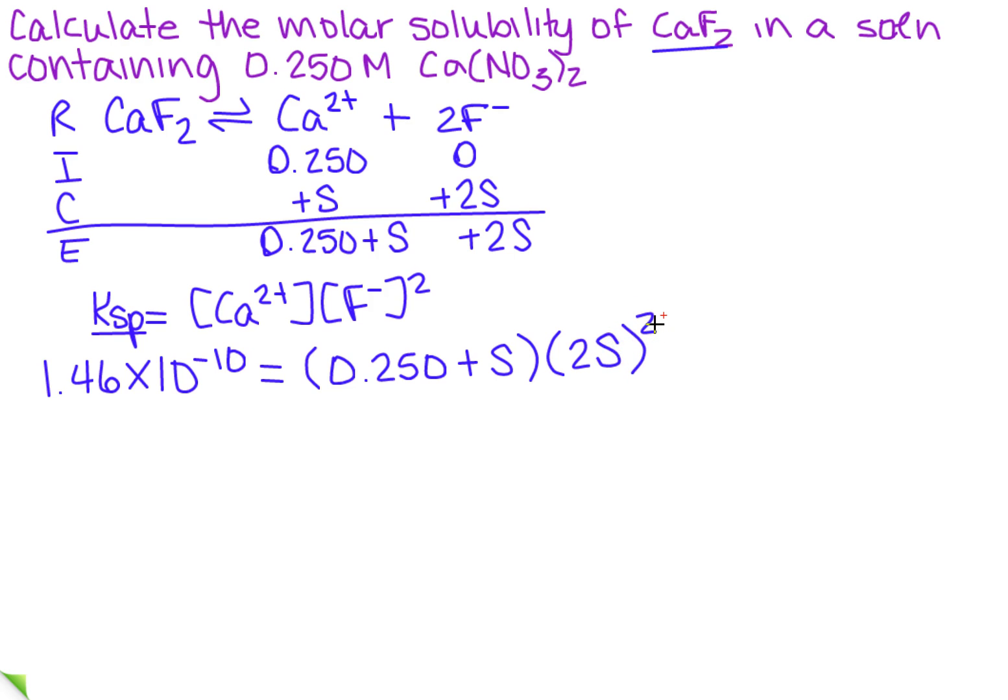Now, what we can do, remember, with solubility is kind of the same thing that we did with acids and bases. I can actually approximate this one right here in the front, and that would give me 1.46 times 10 to the minus 10th equals, and I'm going to have 0.250 times, well, when I square this, I'm going to get 4S squared.